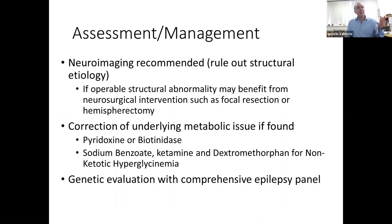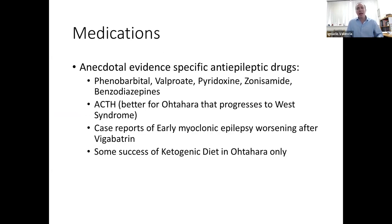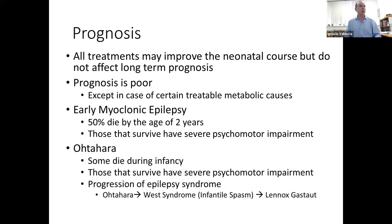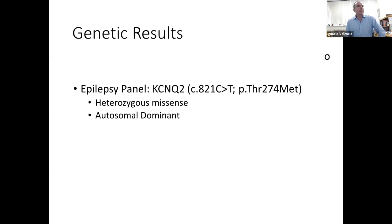As far as assessment and management, you want to image these kids and make sure they don't have a treatable metabolic abnormality, and do a genetic evaluation with a comprehensive epilepsy panel. There's some anecdotal evidence for medications — we have used ACTH and some of these medicines with some success. But a lot of them evolve into infantile spasms and then later into Lennox-Gastaut. Not a lot of these have double-blinded placebo randomized control trials. As mentioned, 50% die by two years old in Ohtahara syndrome — a very poor prognosis largely dependent on the etiology.